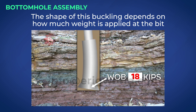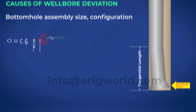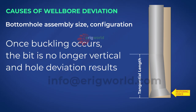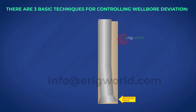If weight on bit is increased, this causes string buckling. Once buckling occurs, the bit is no longer vertical and results in hole deviation. There are three basic techniques for controlling wellbore deviation.